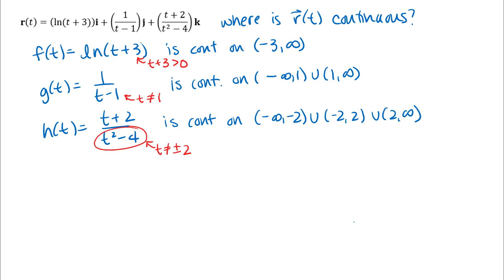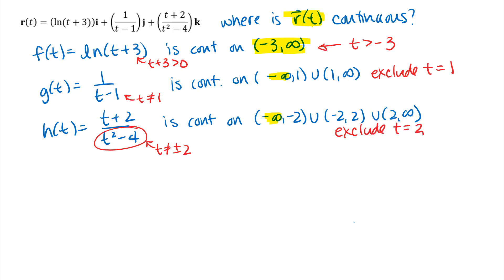To answer the question about r of t, we tie together all three restrictions. From f(t), we're restricted to values greater than negative 3. From g(t), we must exclude t equals 1. From h(t), we must exclude t equals 2 and t equals negative 2. If we can't plug in a t value or find a limit at a t value in one component function, we can't do it for r of t either. So we need t greater than negative 3, excluding t equals 1, t equals 2, and t equals negative 2.